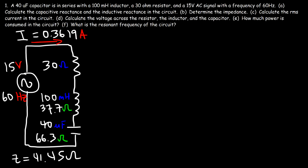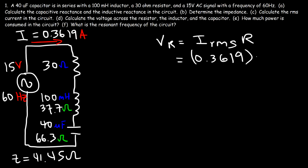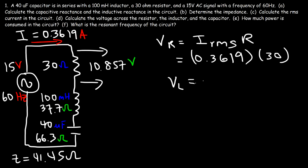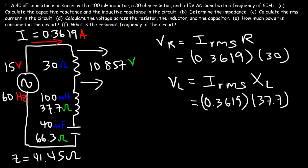Part D: calculate the voltage across the resistor, inductor, and capacitor. For the resistor, V equals IR using the RMS current: 0.3619 times 30 ohms gives 10.857 volts. For the inductor, the voltage is the current times the inductive reactance: 0.3619 times 37.7 ohms gives VL equal to 13.644 volts.